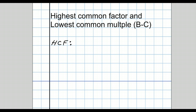The highest common factor is when we talk about two or more numbers. Let's look at these two numbers: 6 and 9. What factor do they have in common? Well, they have the factors 1 and 3. Which of those is highest? The answer is 3. So the highest common factor of 6 and 9 is 3.